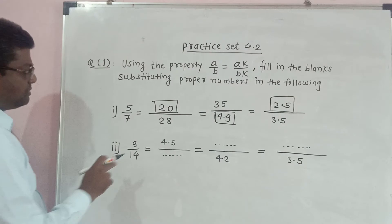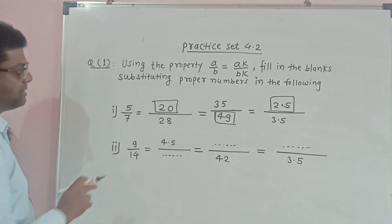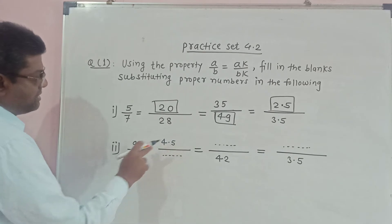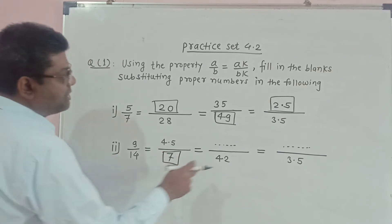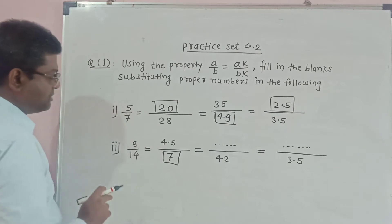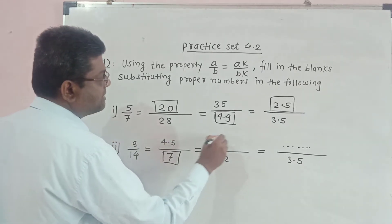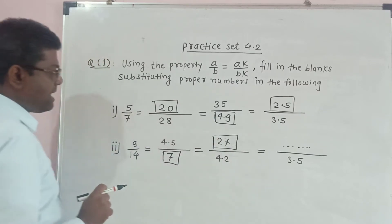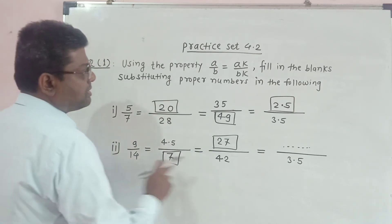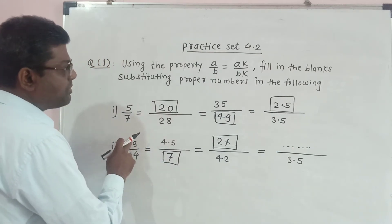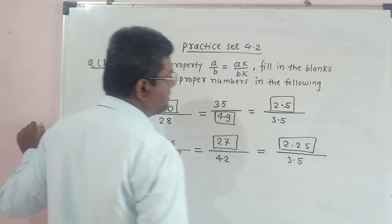Now example number 2. 9 upon 14 is equal to — numerator is 4.5. So, 9 divided by 2 is 4.5. Therefore, 14 divided by 2 is 7. Next, the denominator is 42. So, 14 into 3 is equal to 42, and 9 into 3 is equal to 27. So here the answer will be 27. Next, the denominator is 3.5. So, 14 divided by 4 is equal to 3.5. Therefore, 9 divided by 4 will be 2.25. So here the answer will be 2.25.